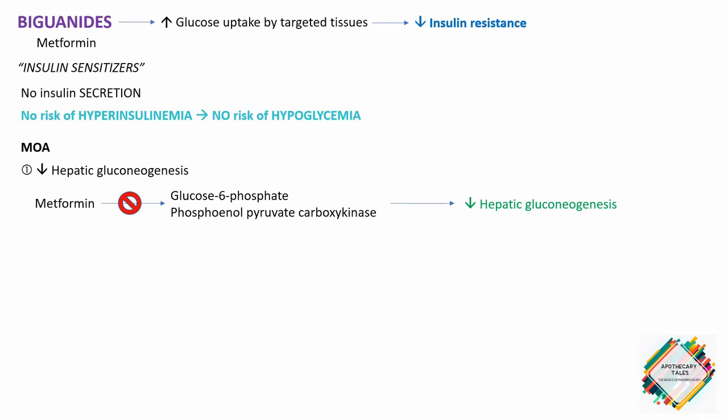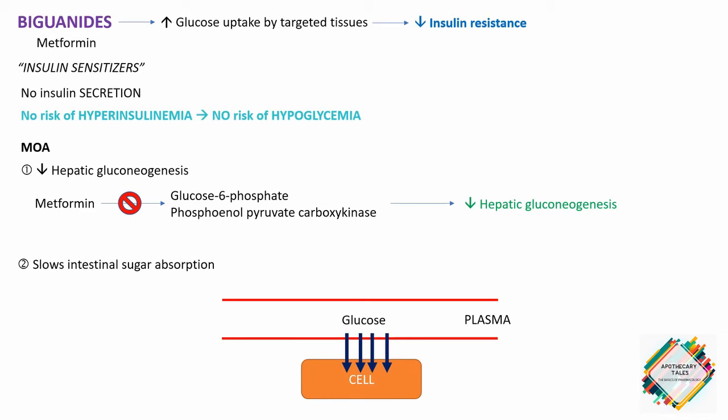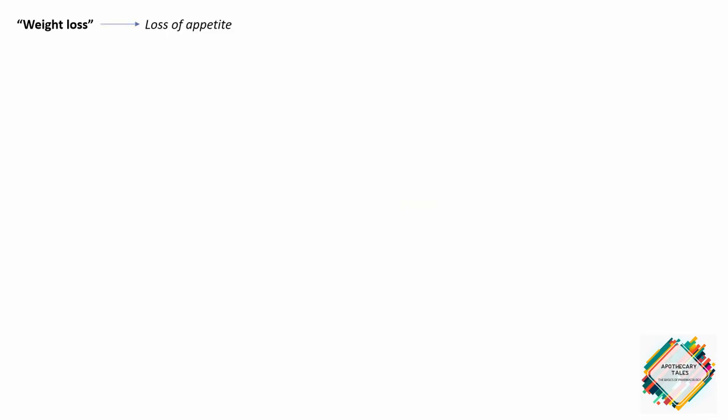The next mechanism is that metformin slows the intestinal absorption of sugars and improves peripheral glucose uptake and utilization. By slowing intestinal absorption of sugar, the cells and tissues need to take up more glucose from the plasma — which is highly elevated in diabetic patients — thereby helping to reduce the total plasma glucose concentration. Weight loss may also occur because metformin causes loss of appetite, though the exact mechanism of this appetite loss is not known.